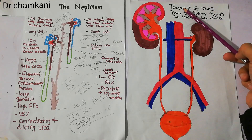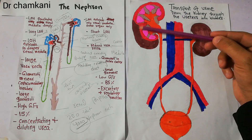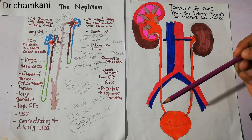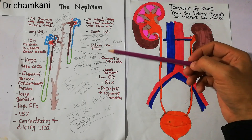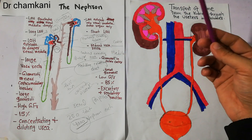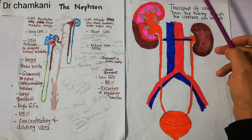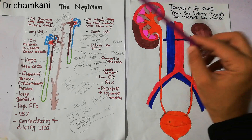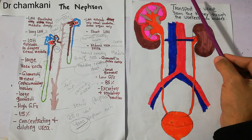In this lecture, we will talk about transport of urine from the kidney through the ureters into the bladder. As we are discussing urine formation and have discussed the nephron and the bladder, it is now important to discuss the transport of urine finally. We will discuss initially the urine formation at the nephron, and then the transport of urine.